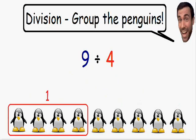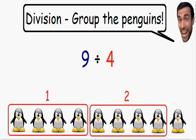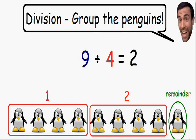Well here we have one group of 4, and here we have our second group of 4. But notice how we can't make another group of 4 — we still have one penguin left over. This is what we call the remainder. Any leftovers are called the remainder. Since we have one penguin left over, we have a remainder of 1. So 9 divided by 4 gives us 2 groups, with a remainder of 1. We use the letter R for remainder. The final answer is 2 remainder 1.